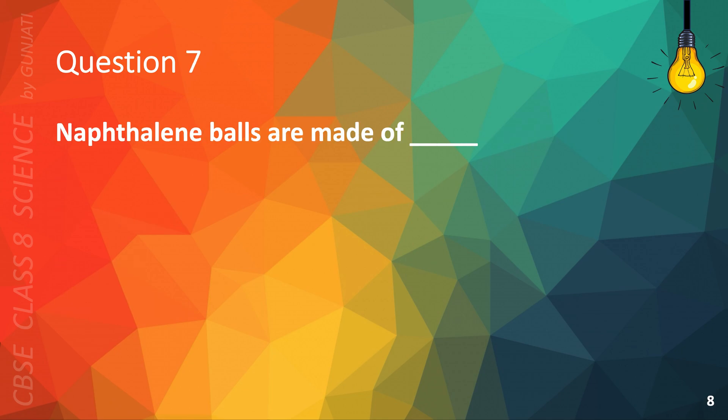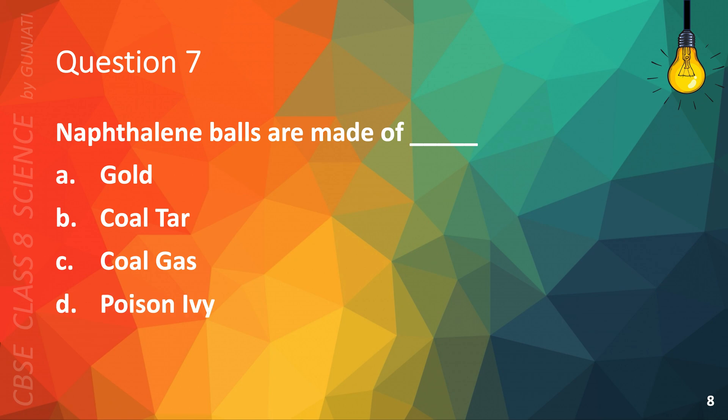Question 7. Naphthalene balls are made of A. Gold, B. Coal tar, C. Coal gas, or D. Poison ivy?